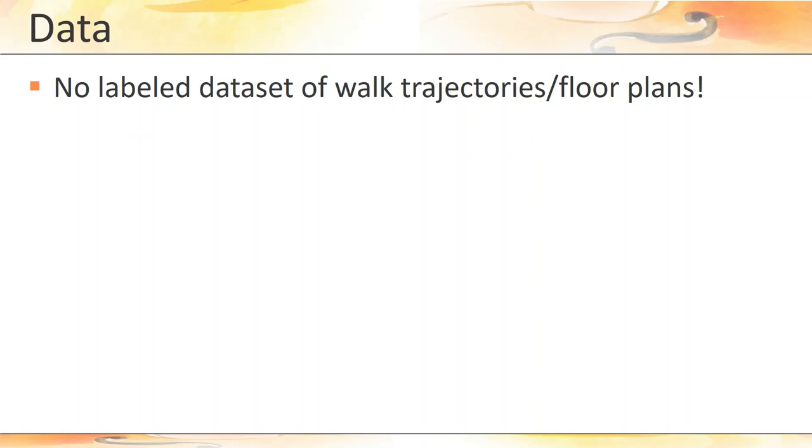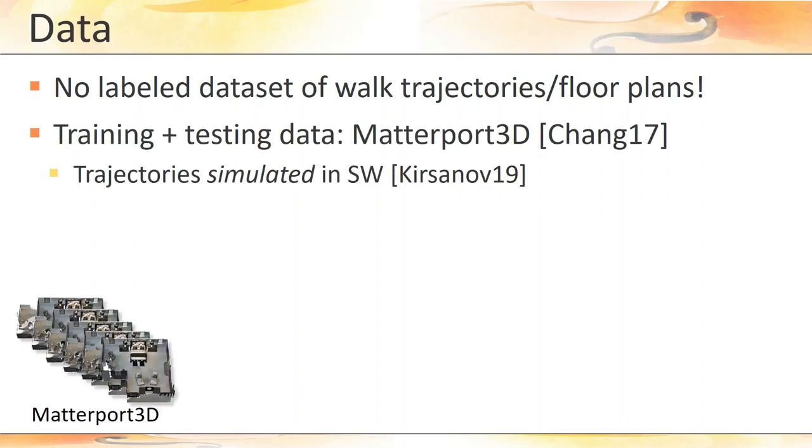Having just described the representations used for the input and output of the networks, the natural question is, where do we get the actual data items for training and testing? One major problem in this sense is that there exists no dataset consisting of pairs of indoor walk trajectories and corresponding annotated floor plans.